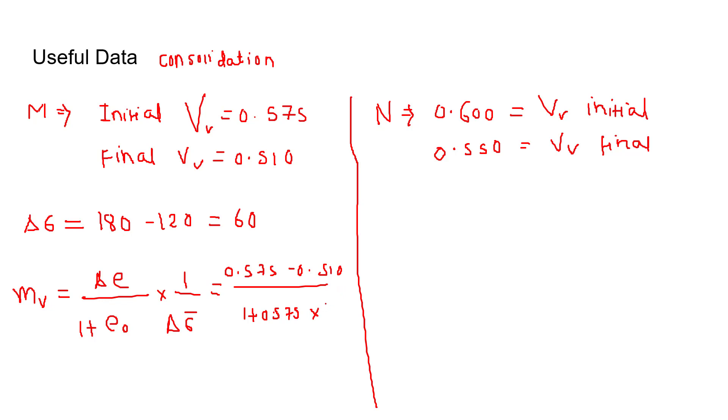divided by - giving a bracket because I have to multiply with this - so the change in sigma is 60. It will come out to be 6.878 × 10⁻⁴ meter square per kilonewton.